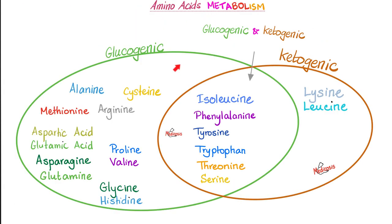Remember, some amino acids are glucogenic, some are both glucogenic and ketogenic, and some are purely ketogenic. Who are purely ketogenic? Lysine and leucine. Since they are not part of the green circle, lysine and leucine cannot raise my blood sugar during prolonged fasting or starvation. Isoleucine, phenylalanine, tyrosine, tryptophan, threonine, and serine are both glucogenic and ketogenic — so they are still glucogenic and will raise blood sugar during fasting. Please refer to my video titled gluconeogenesis to learn more.